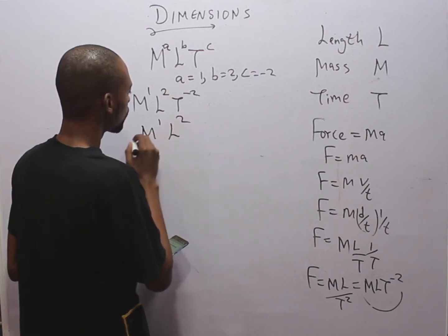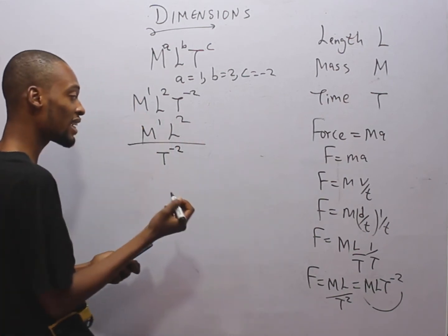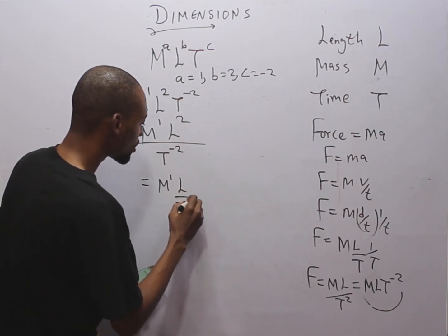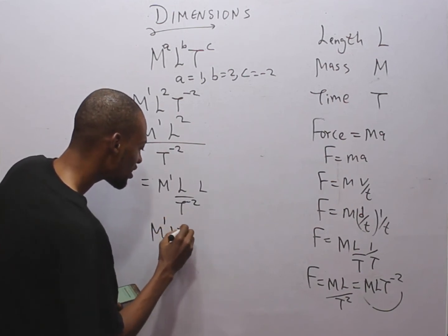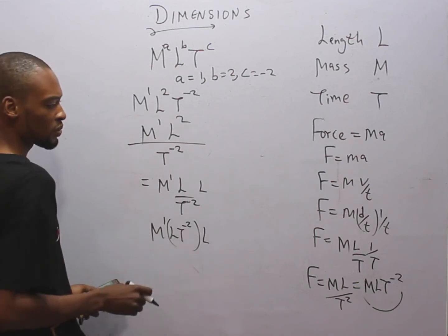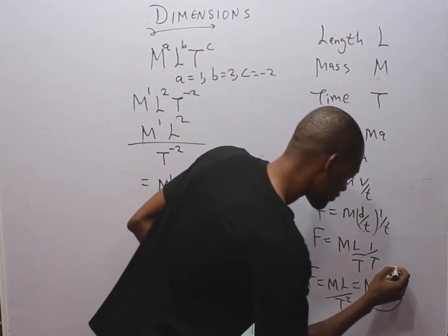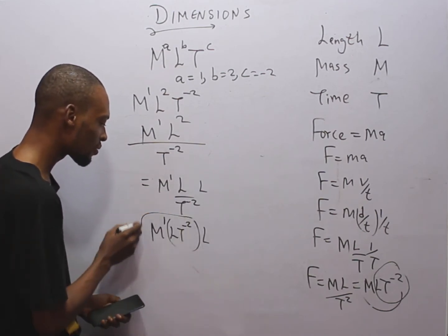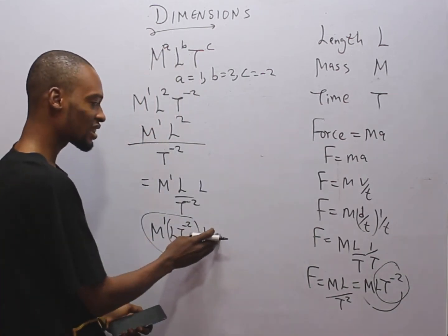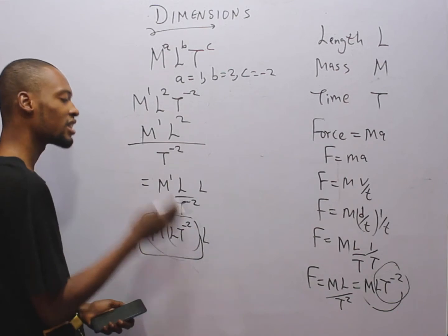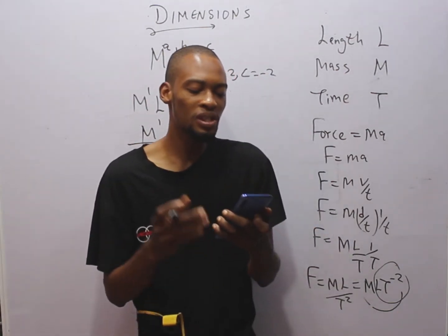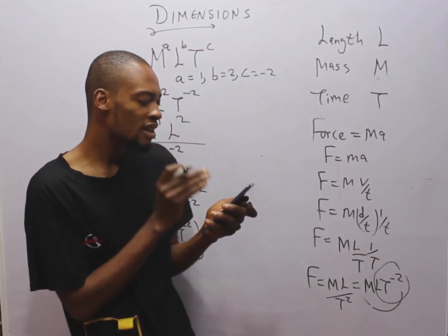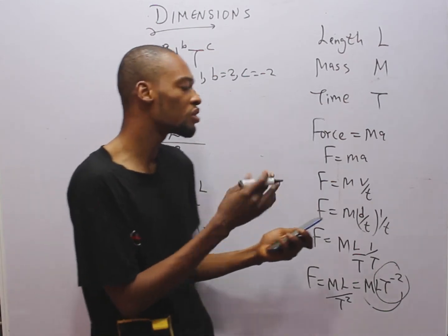Breaking it down: M¹ × L² × T⁻² can be written as M¹ × L × T⁻² × L. We recognize that L·T⁻² is acceleration, and M·L·T⁻² is force. So this becomes force times distance L. Force times distance is simply work done or energy. So the answer is option B — energy, or equivalently work done.